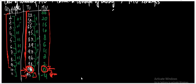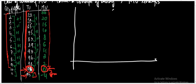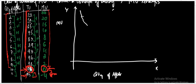Let me plot the units of apples and the marginal utility on a graph. If I take the quantity of apples on the x-axis and the marginal utility on the y-axis, I will get a graph like this. Because there is a negative marginal utility equal to minus 4, I will get a graph like this.